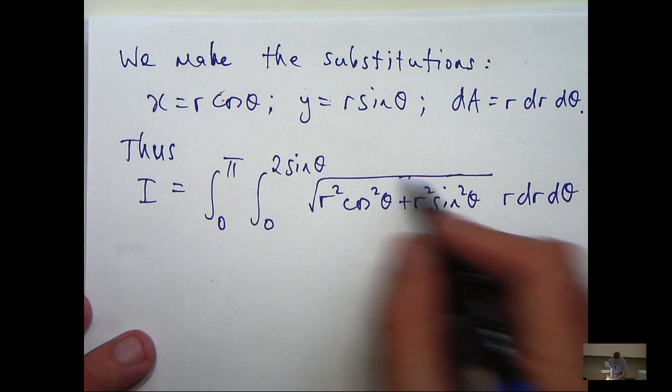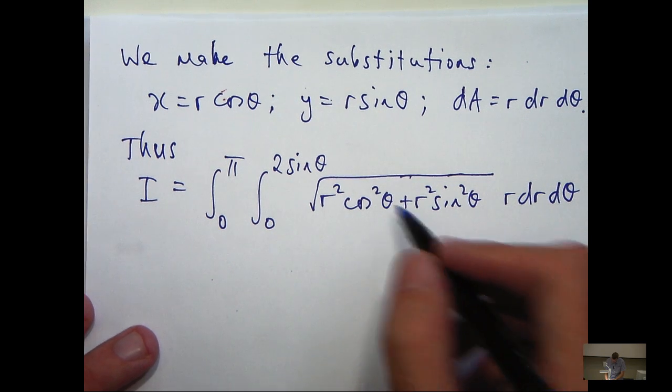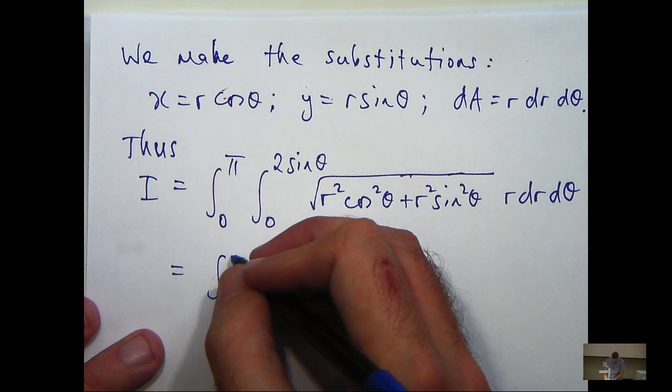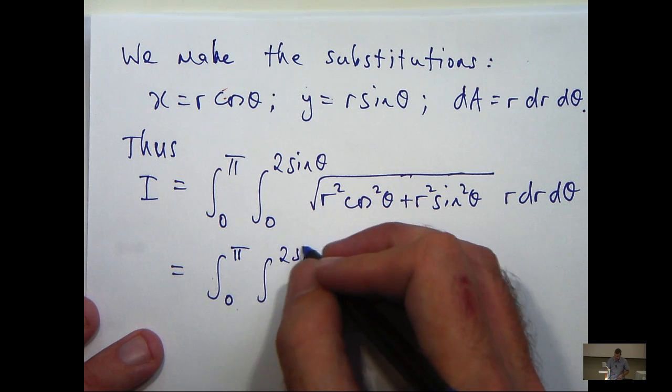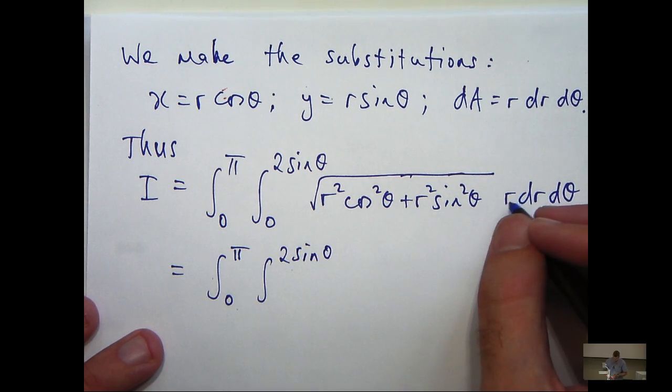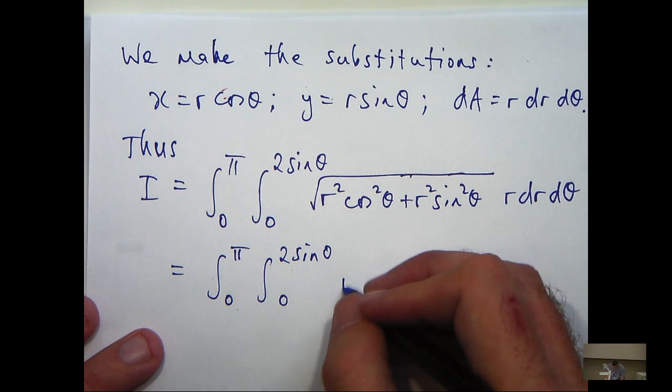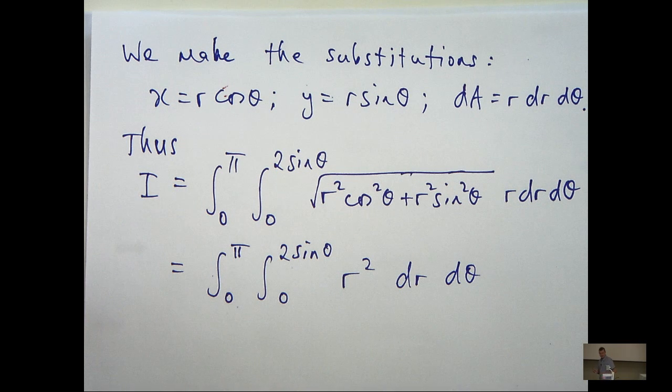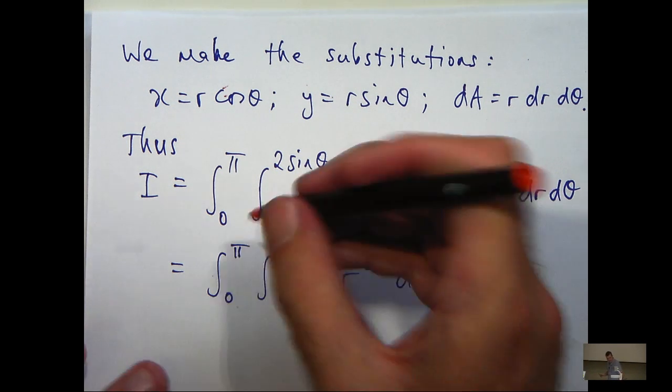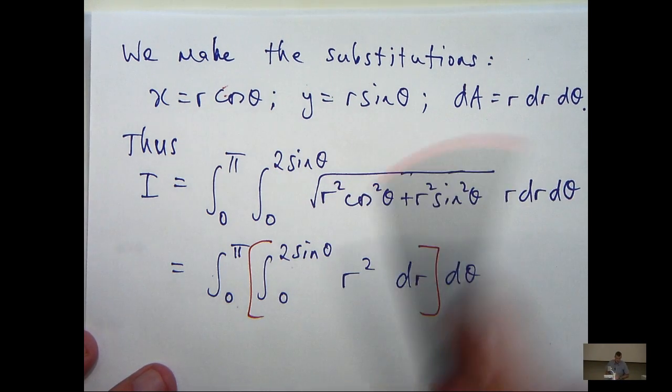So, now it's just a matter of cleaning this up and integrating. So, firstly, I can clean up in here. I'll get the square root of r squared. So, if I combine that with this r over here, I'll get the following.